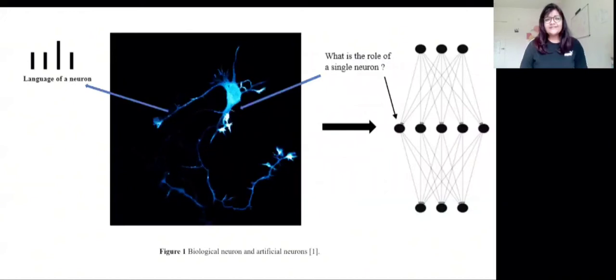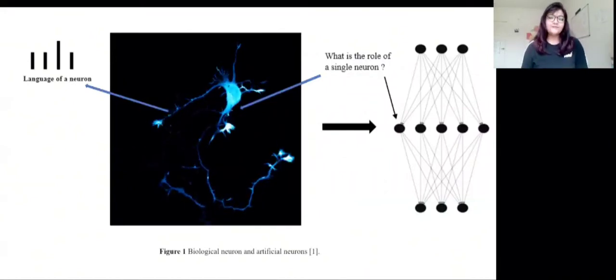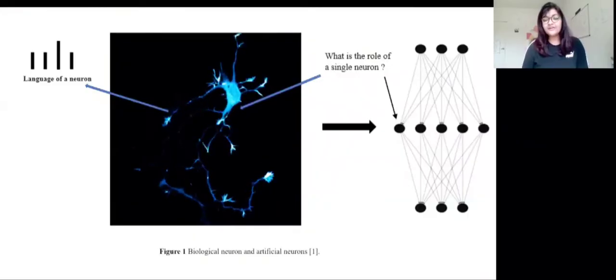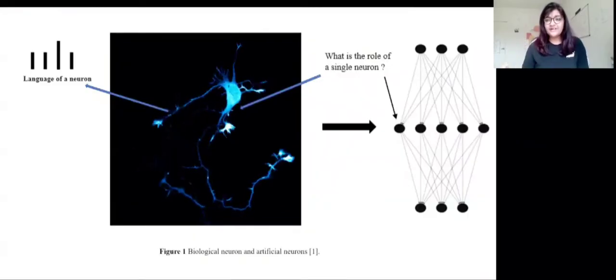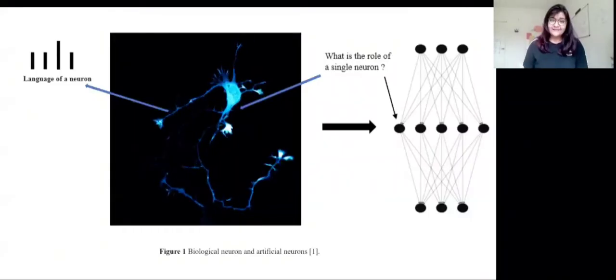There's no doubt neural networks are built of human brain. If we're talking about doing computation in a faster and efficient manner, we need to understand the role of single neurons. When we design any neural network model, we're just trying to model these single neurons.